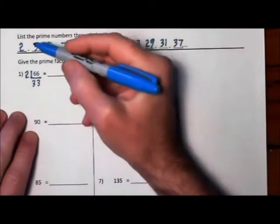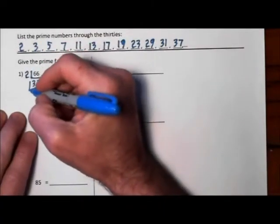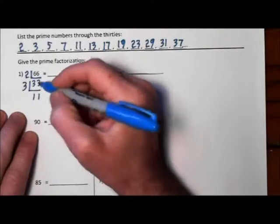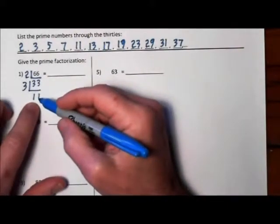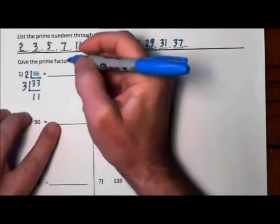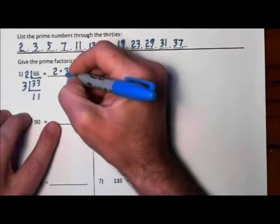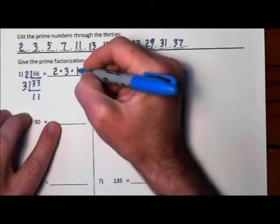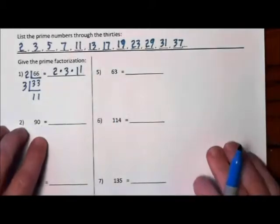Then we move to the next prime number 3. Will 3 go into 33? Yes. 3 goes in 11 times. Once you have a prime number down here, you're finished. 11 is prime. So the prime factorization of 66 is 2 times 3 times 11.